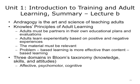This concludes the lecture on training in adult learning. In summary: the Knowles Principles of Adult Learning can be used as a guide to help you select appropriate learning resources, exercises, and training experiences. Adults learn experientially based on positive and negative experiences. Training material must be relevant, and problem-based learning is more effective than content-based learning. When designing training, you should think about how each outcome may be classified in one of the three domains of Bloom's Taxonomy: affective, psychomotor, and cognitive — or knowledge, skills, and attitudes.